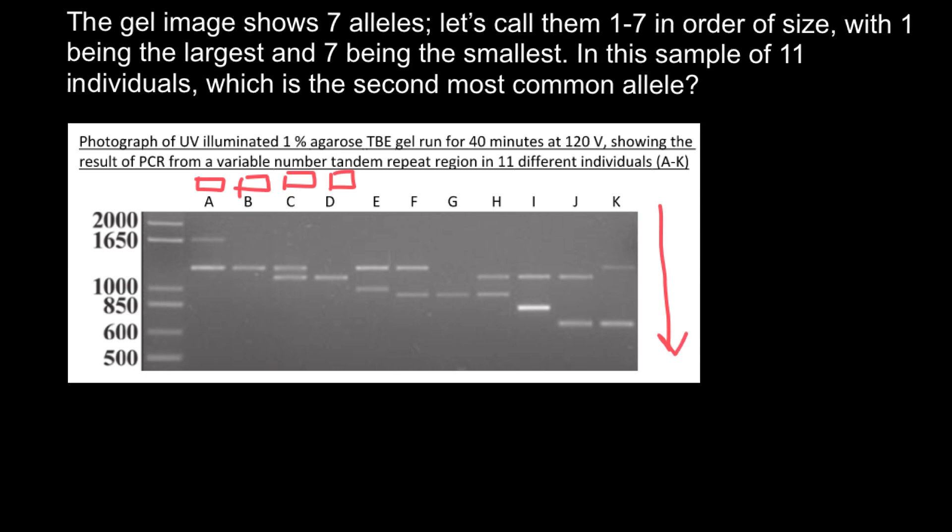This one would be the heaviest and this two would be the lightest, or would have the smallest number of tandem repeats. So now when we know this information, let's take a look at people. We are told we have 11 samples from 11 people.